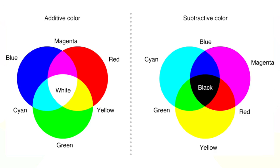Subtractive colors work a little differently. Subtractive colors are when light beams down, hits an object, and the object absorbs all of the colors except for what you see. For example, the light bulbs in my room are shining onto my skin, and my skin is absorbing all the colors and just giving you the brown that you see. That's subtractive color.